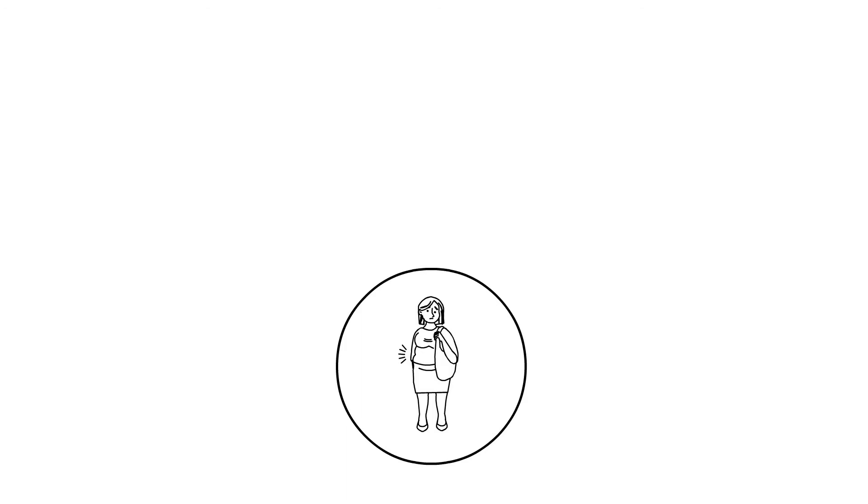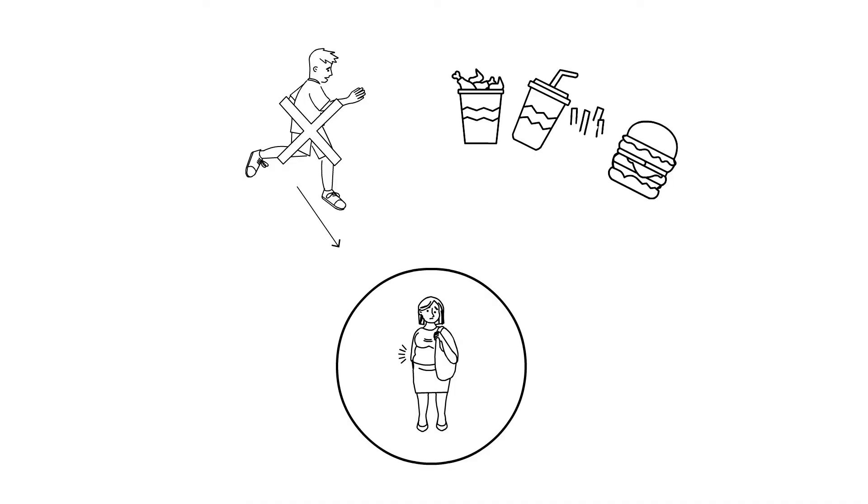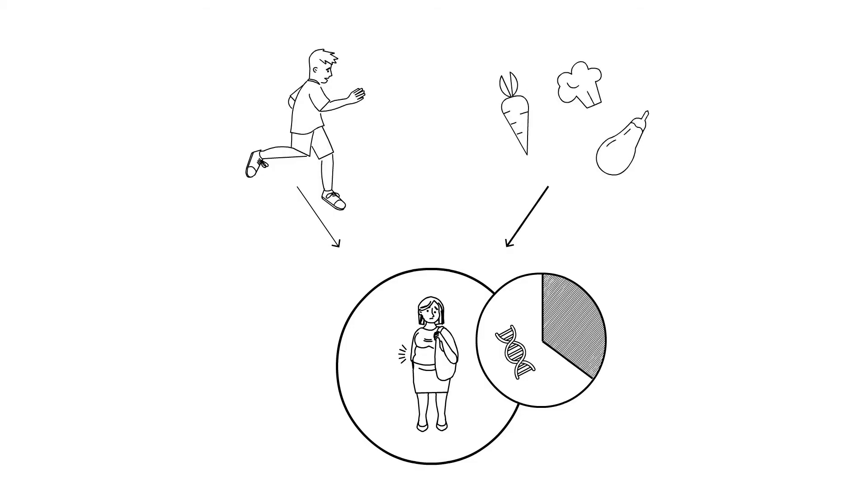Environmental risk factors that contribute to becoming obese are, for instance, unhealthy lifestyle habits like not getting enough physical activity or consuming too many calories. Someone can have a large genetic predisposition of becoming obese, but by reducing the environmental effects, for instance by living healthier, that person may avoid becoming obese at all.